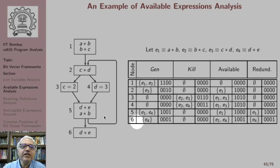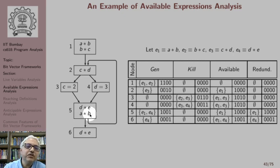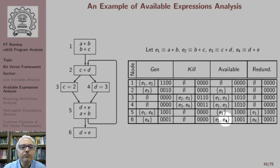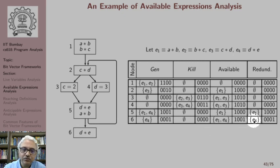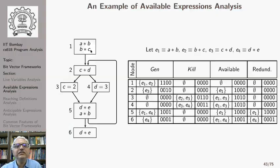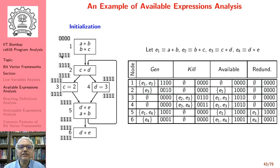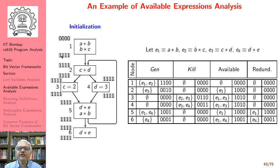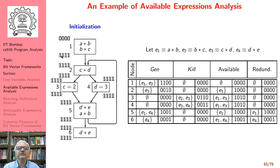The only possibility of common subexpression elimination is in nodes 5 and 6. In node 5, expression a*b (e1) is available along this path, and there is also an upwards exposed computation of a*b within node 5, so e1 is redundant. Similarly, in node 6, both e1 and e4 are available, and e4 is computed with an upwards exposed use, so e4 is redundant in node 6. We perform our data flow analysis by initializing all values to the universal set of all 1s. Note that this is an intersection problem, so we choose the universal set as the initial value.